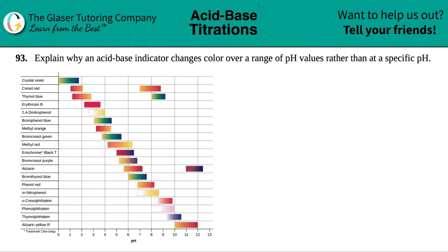Number 93: explain why an acid-base indicator changes color over a range of pH values rather than at a specific pH.